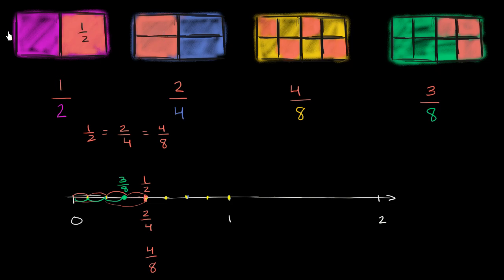because if you took this one right over here, if you took this first one, and you divided each of your two equal sections into two equal sections, so you split it again, then you see that this is equal to 2 fourths.